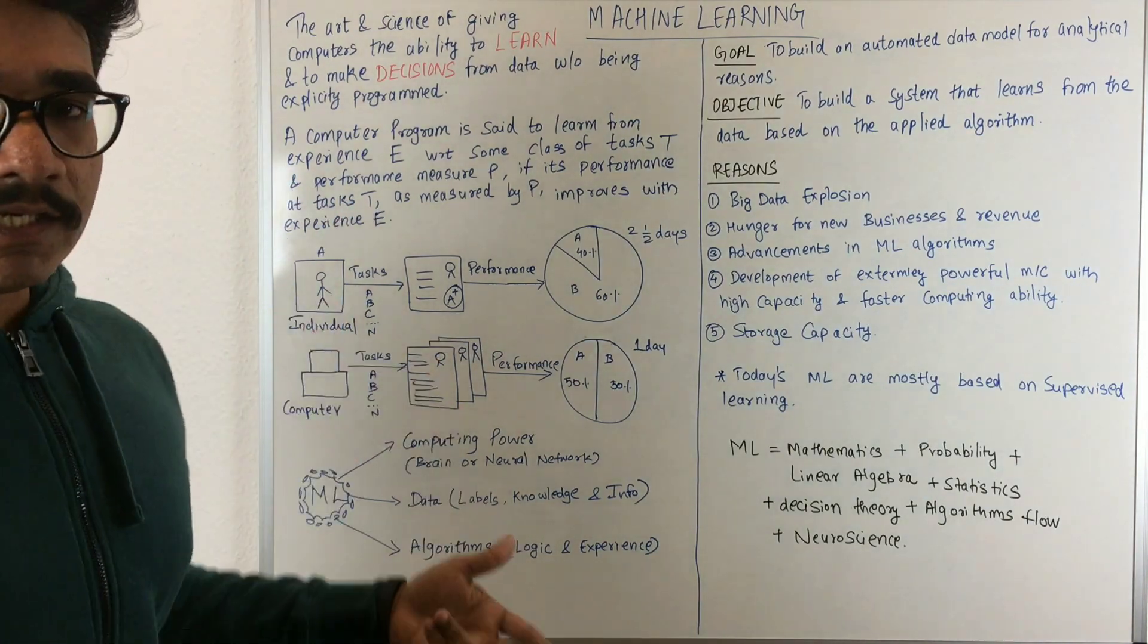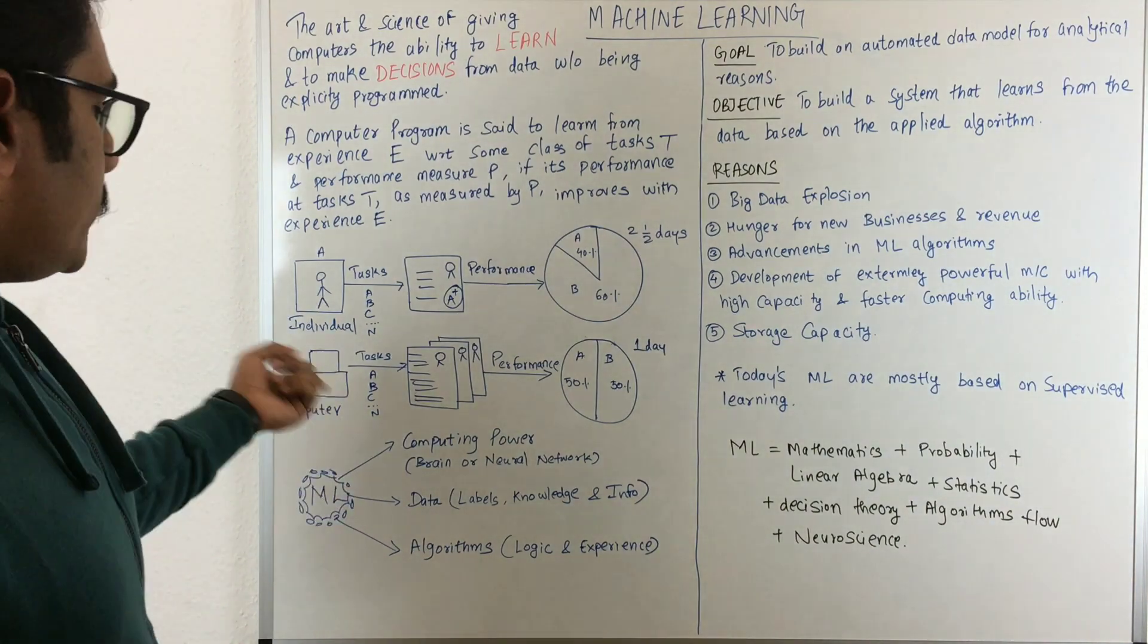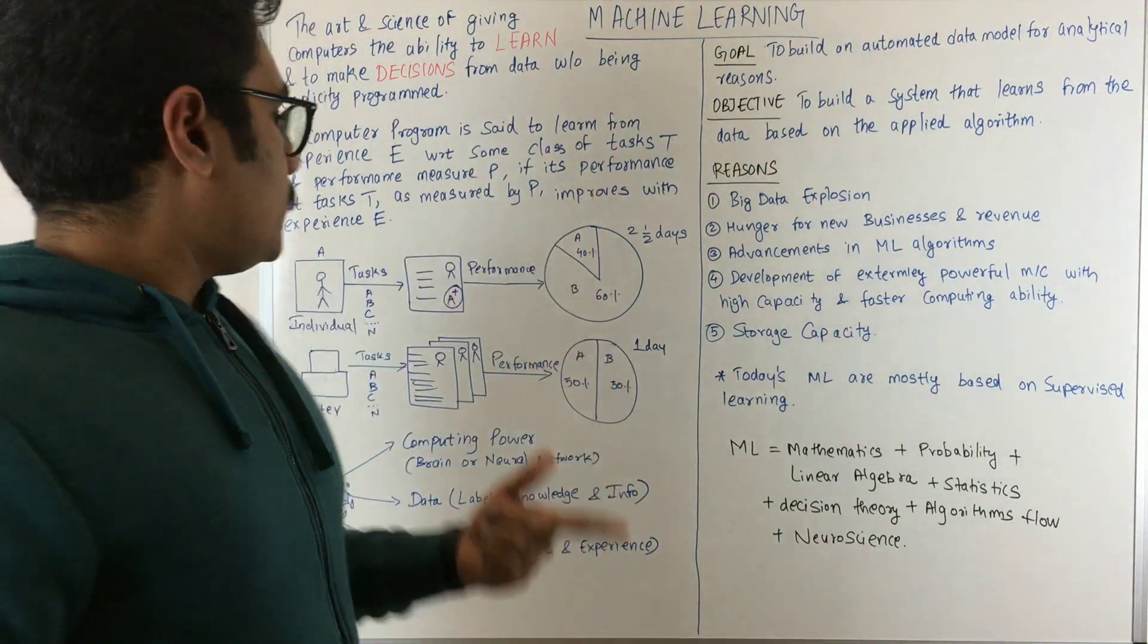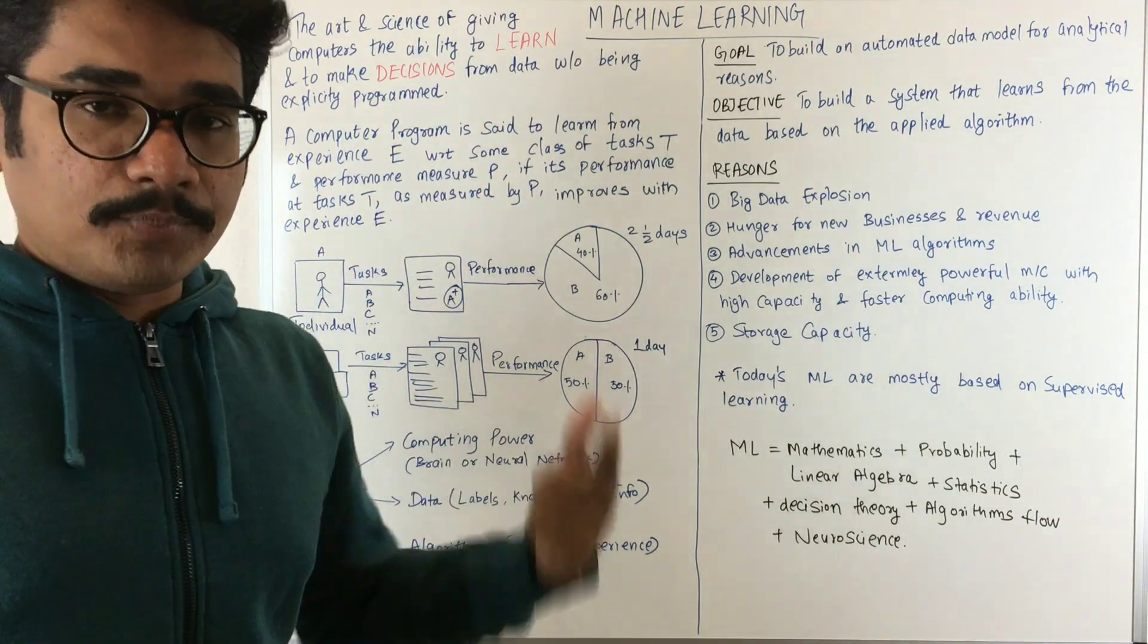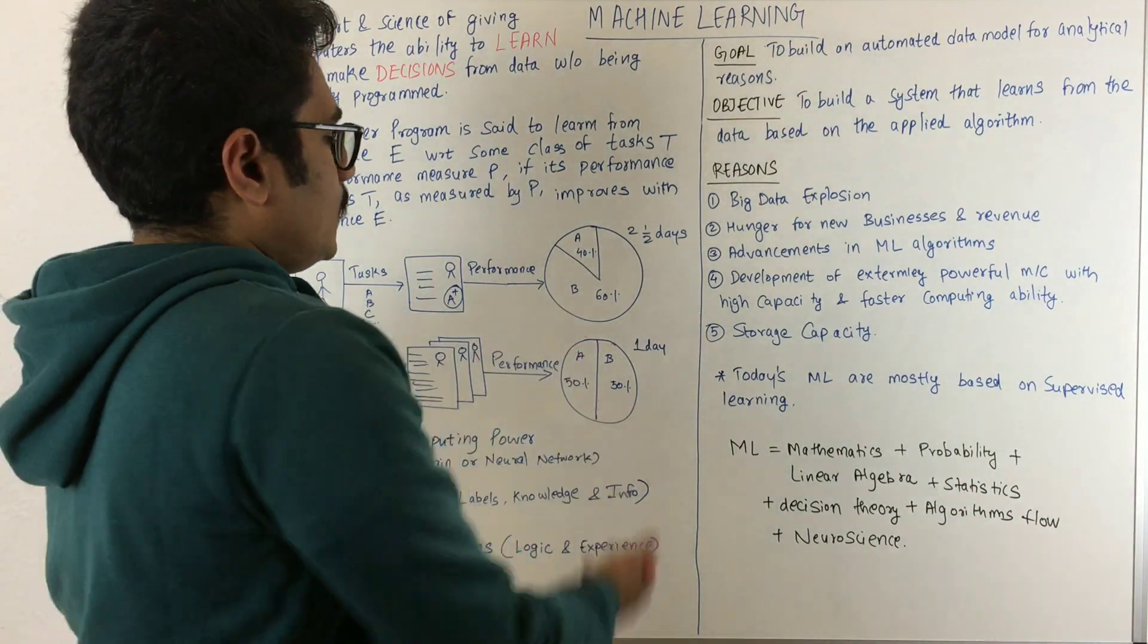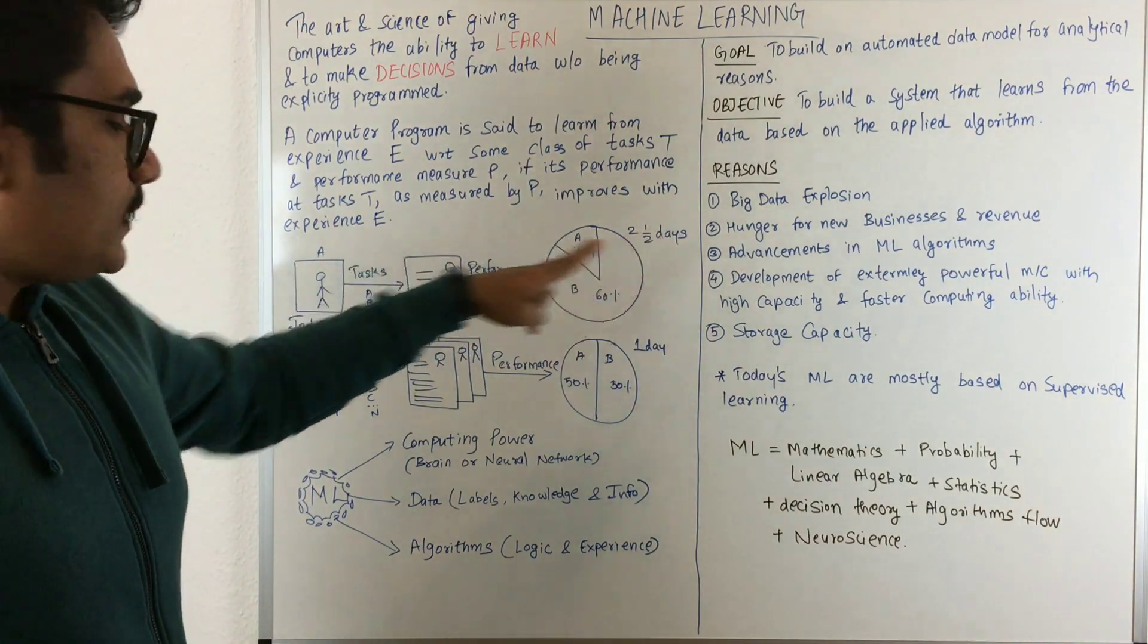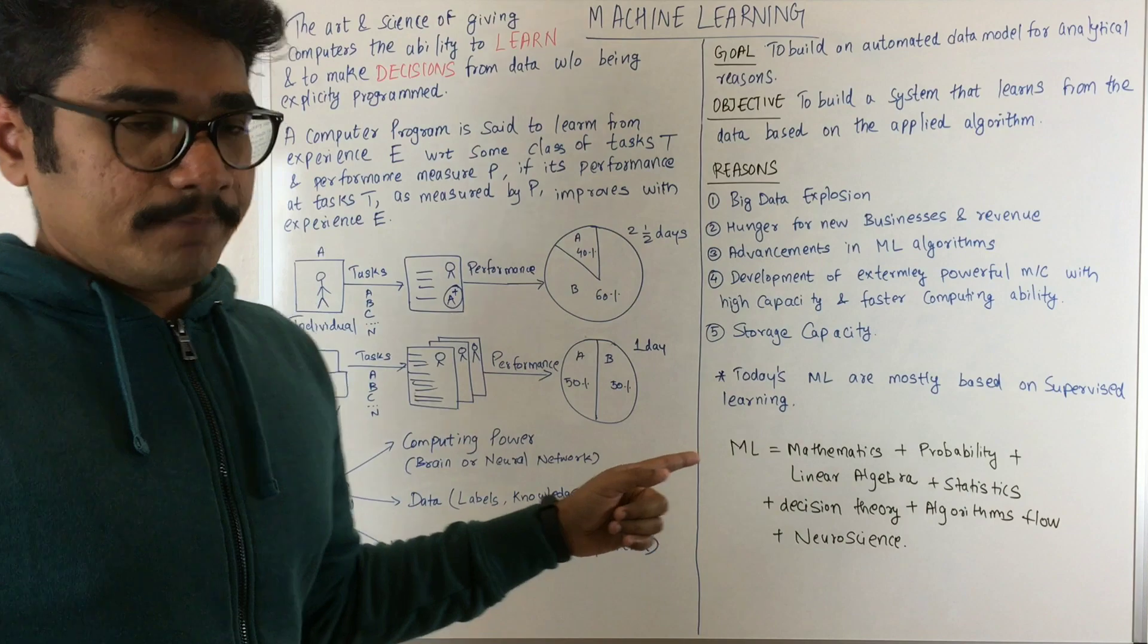The performance will be evaluated. If the individual took two and a half days, the computer would take one day. For the two tasks, there would be 50 and 50 percent accuracy—no particular bias.